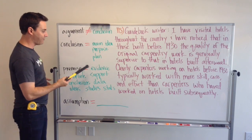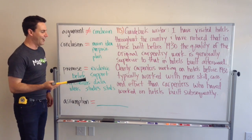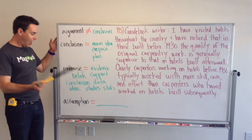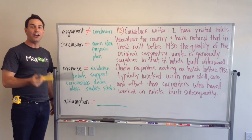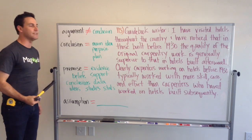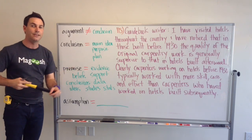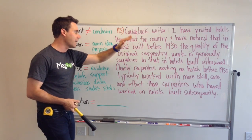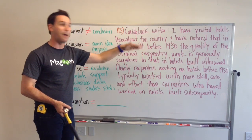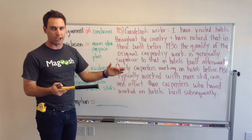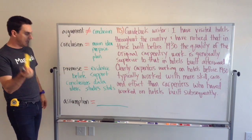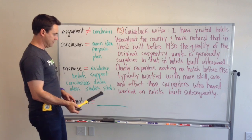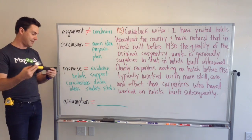Premises can be beliefs, evidence, support, data, or other conclusions. You can have other conclusions as premises. Sometimes in the bold-faced arguments you'll see there'll be a midway, sort of temporary conclusion that builds to even bigger conclusions, so other conclusions can be premises. Ideas, studies, statistics, and opinions can be premises — it doesn't matter.